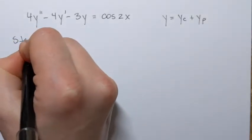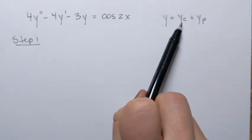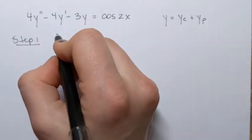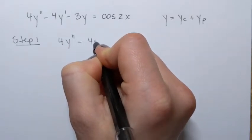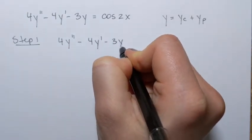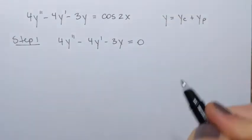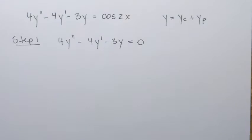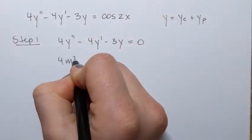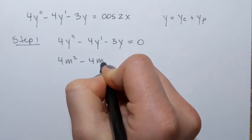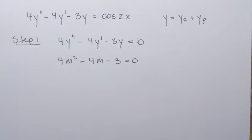We start in the first step by finding the complementary function. That is the same as the solution to the homogeneous differential equation 4y'' minus 4y' minus 3y equals 0. To solve that, we set up the characteristic equation 4m² minus 4m minus 3 equals 0, which is a quadratic equation.